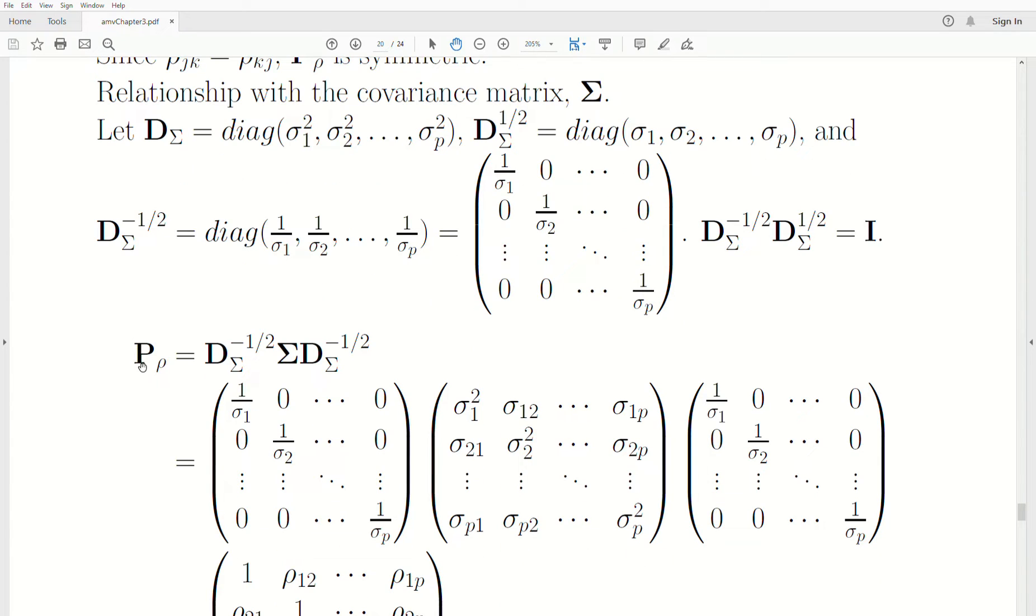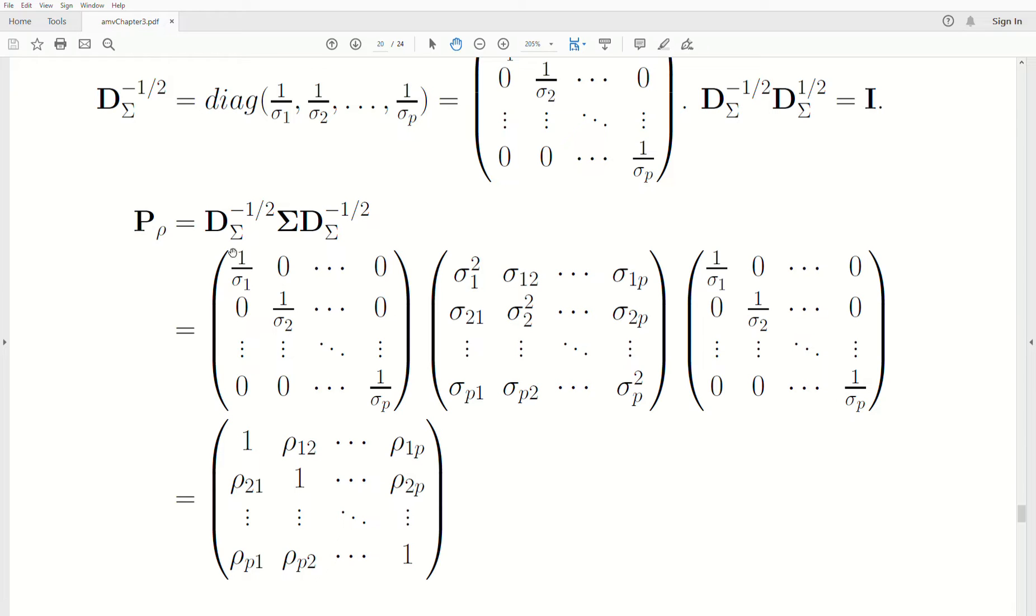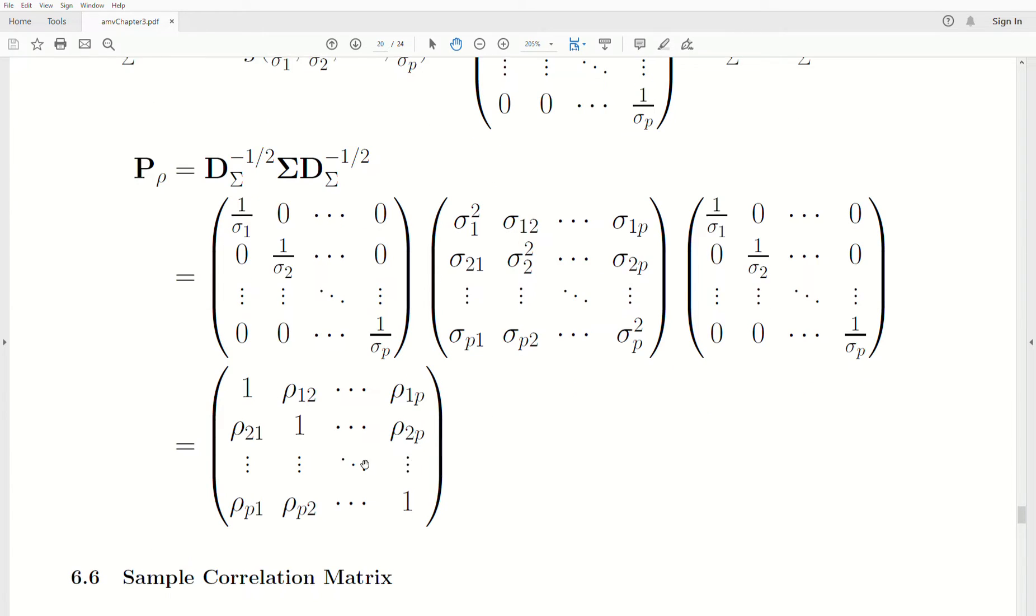So rho, or capital P, which is the correlation matrix, can be thought of as this matrix product. It's the inverse of the square root matrix of D times sigma, which is the covariance matrix, times the inverse of the square root matrix. And more explicitly, they're defined like this. Remember when you multiply a matrix times a diagonal element, this gets put on each row respectively. And when you right multiply by a diagonal element, that gets put on each column. And so that matrix product creates this correlation matrix.